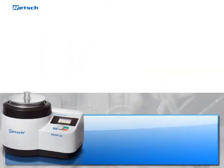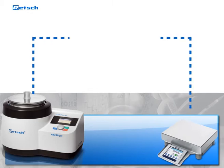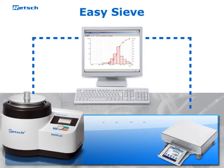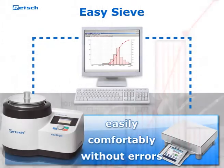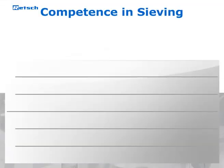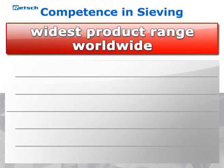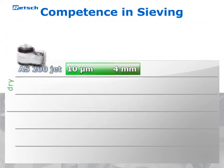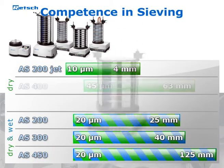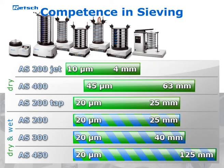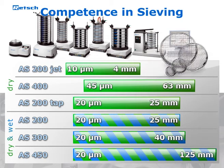Thanks to an integrated interface, the AS200Jet can be controlled with the evaluation software EasySieV. This program allows control of the entire sieving process and subsequent documentation easily, comfortably, and without errors. As an expert for sieve analysis, Rech offers the widest product range in this segment. In addition to the AS200Jet, the program also includes vibratory sieve shakers for dry and wet sieving, as well as instruments for horizontal and tap sieving. The EasySieV software for automated evaluation of sieving results and high-quality test sieves complete the product line.